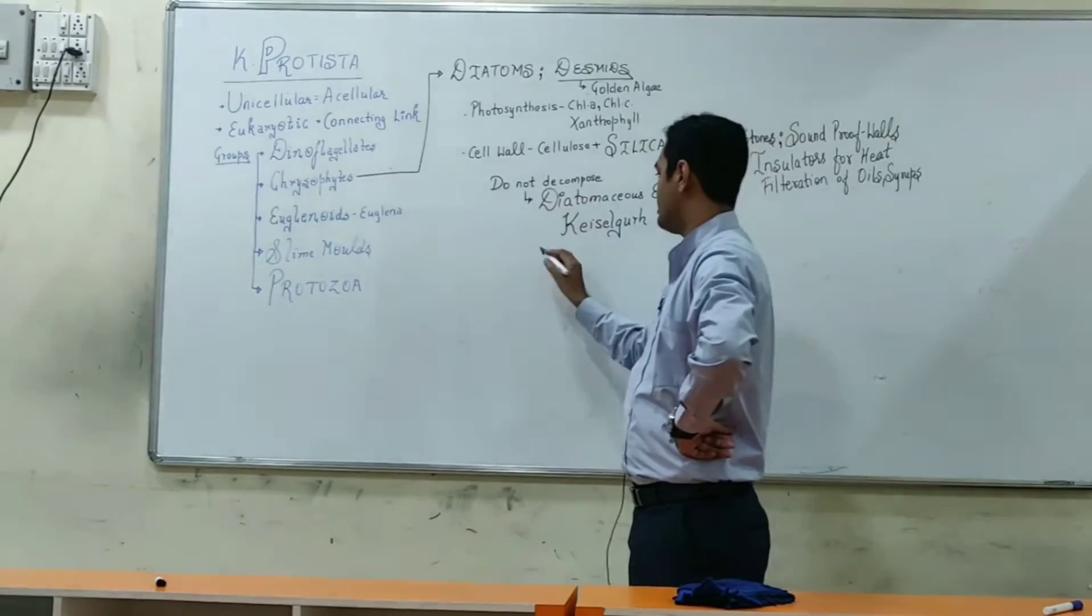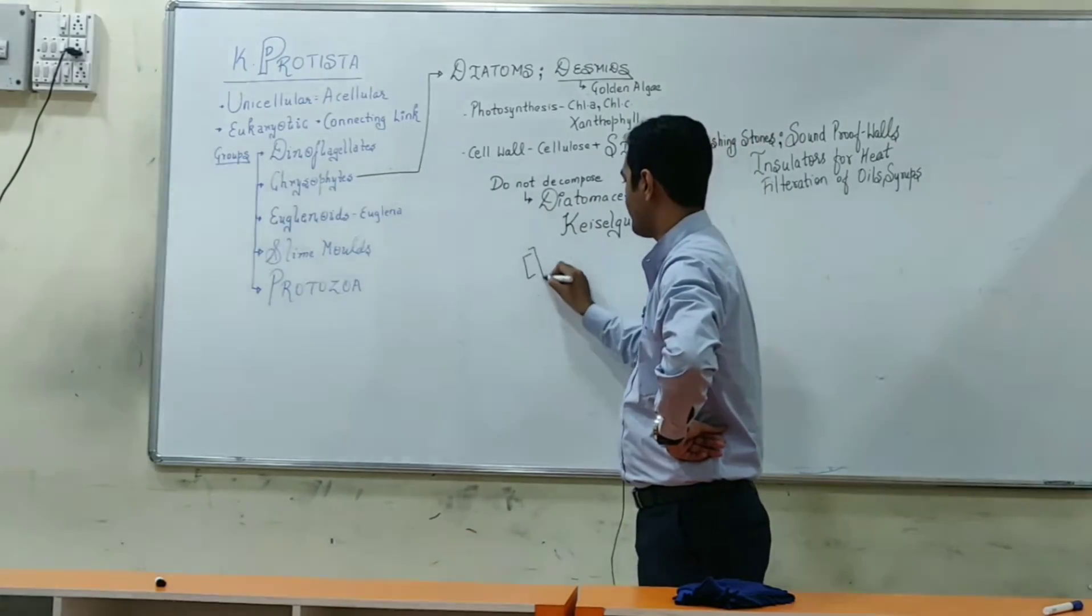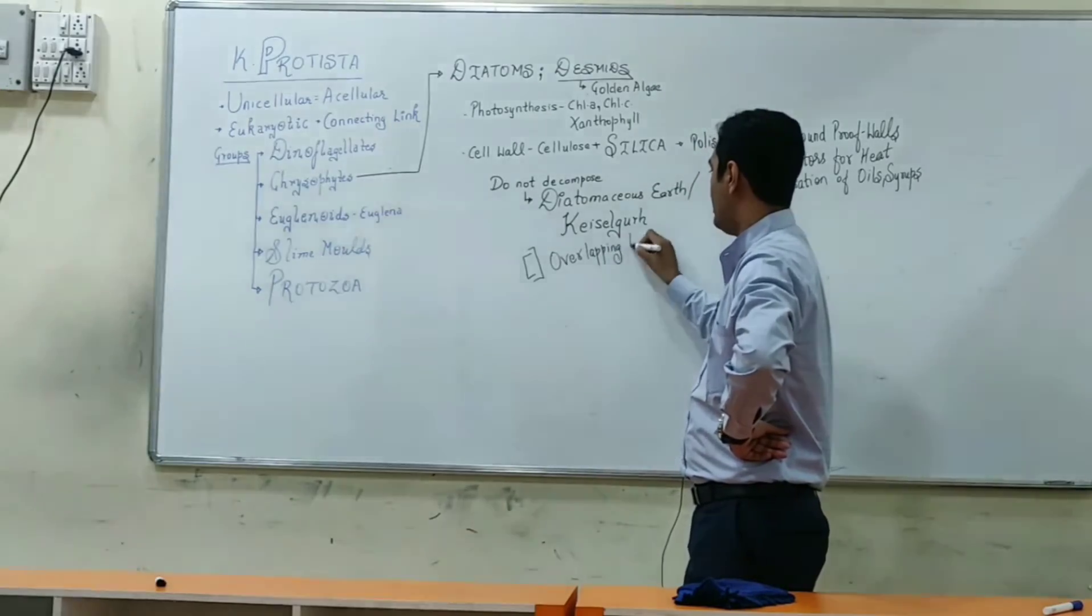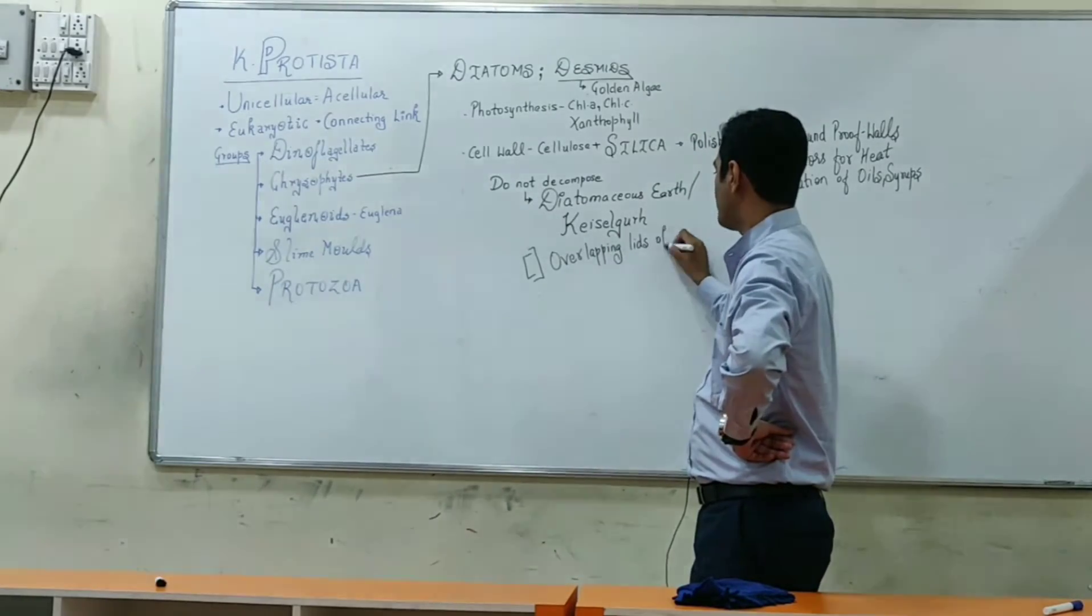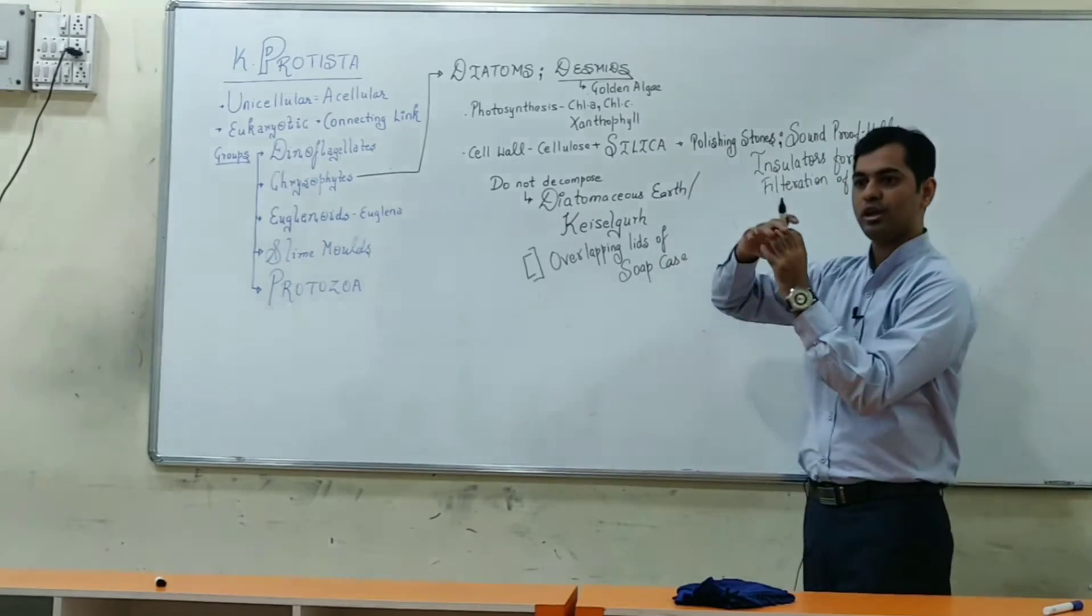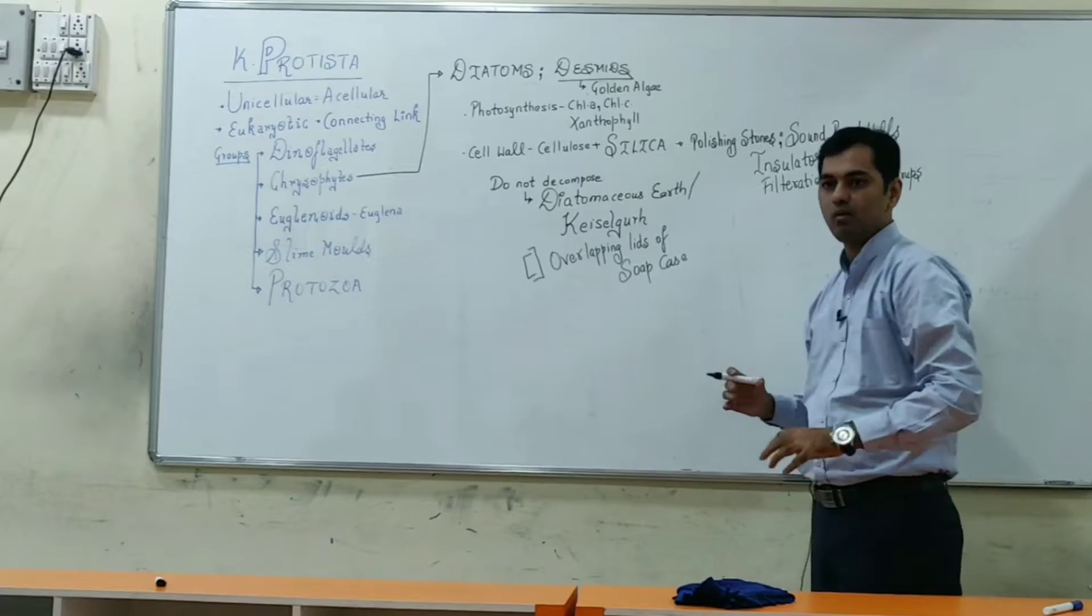Their cell wall appearance is known as overlapping lids of a soap case. A soap case is a soap box - how a soap box closes with one lid over another, similarly they have an overlapping type of cell wall.